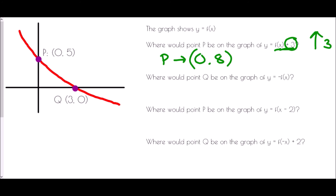Next, where would point Q be on the graph of y equals negative f of x? The negative tells me it's going to be a reflection. Because it is on the outside of f of x, that is a reflection in the x-axis. Q is already on the x-axis, and therefore Q would not change — it would stay in exactly the same position. It is what would be known as an invariant point.